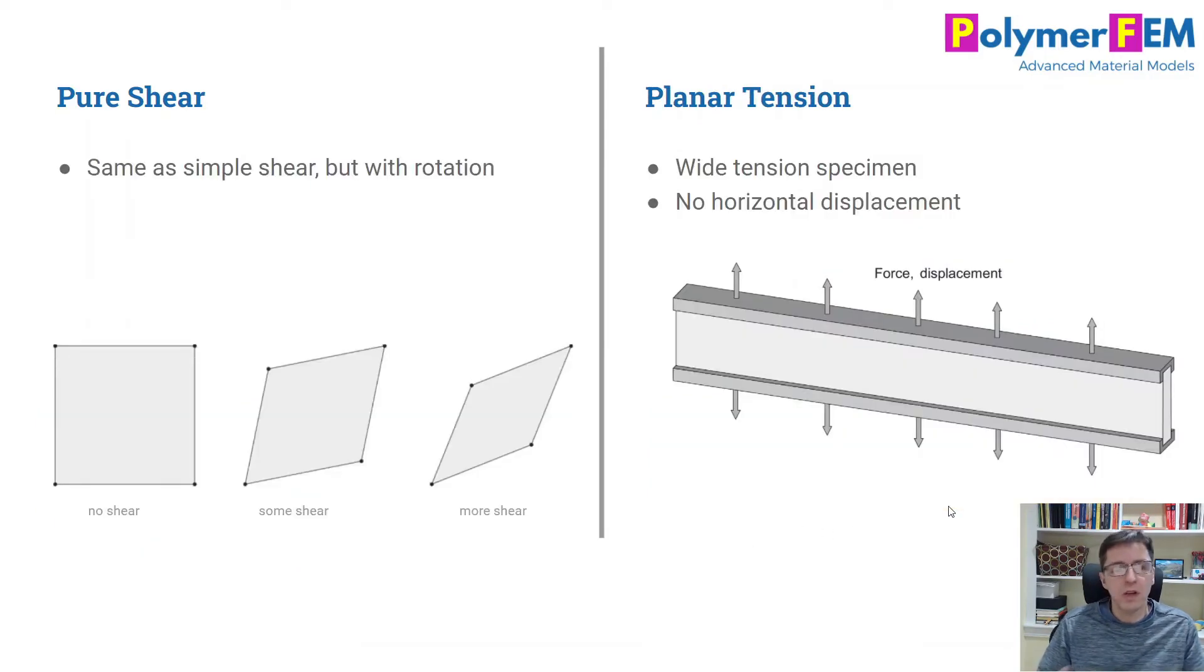Today, the focus is on the similarities between pure shear and planar tension. So what is planar tension? It's a pretty interesting test. You take a specimen and you pull on it as shown in the schematic. You have, in this case, set up the experiment such that all deformation is vertical, up and down. No material is really supposed to move left and right. There will be some changes in the thickness of the specimen, but otherwise it's just up and down.